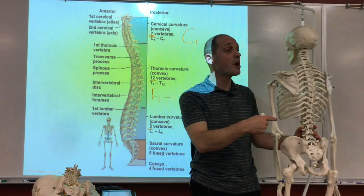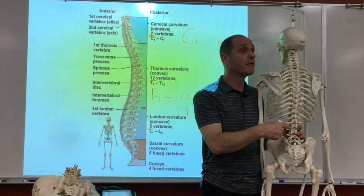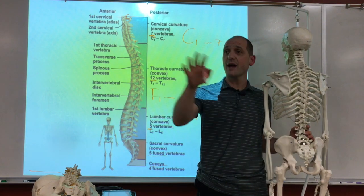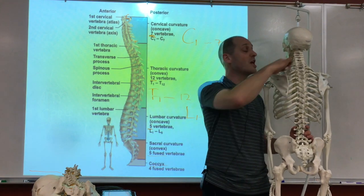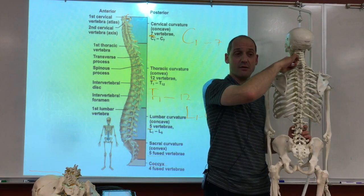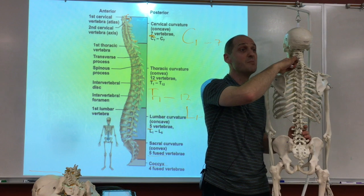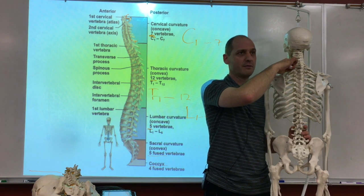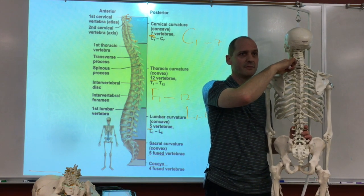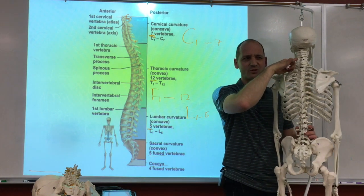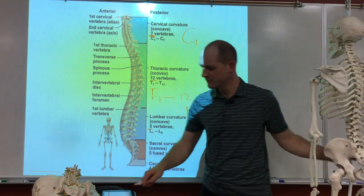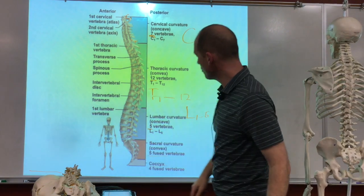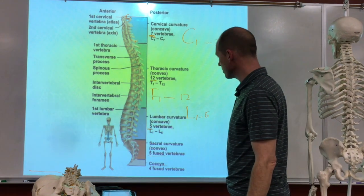Even if you are a giraffe, you still have seven vertebrae in the neck — they're just really big. It's all the mammal stuff. We're all mammals. There's proof that we are animals somewhat.